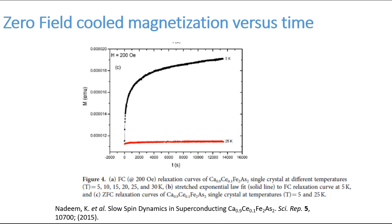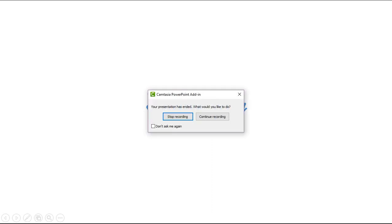In this way you can find the zero field cool and field cool magnetization curves, which give very useful information about magnetic relaxation. The shape of the curves is very important. I suggest you learn about magnetic relaxations for paramagnetic, ferrimagnetic, and other nano systems to understand this phenomenon deeply. Allah Hafiz.